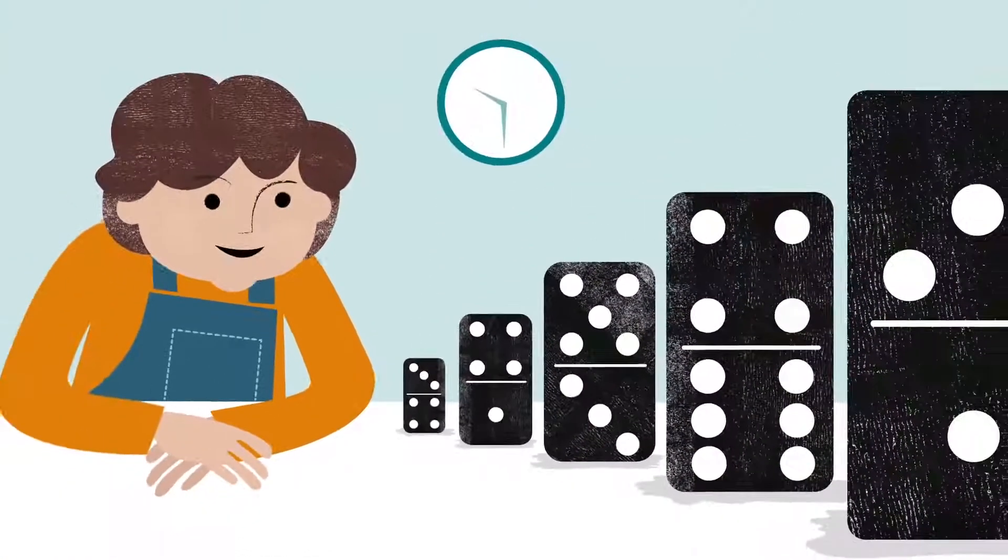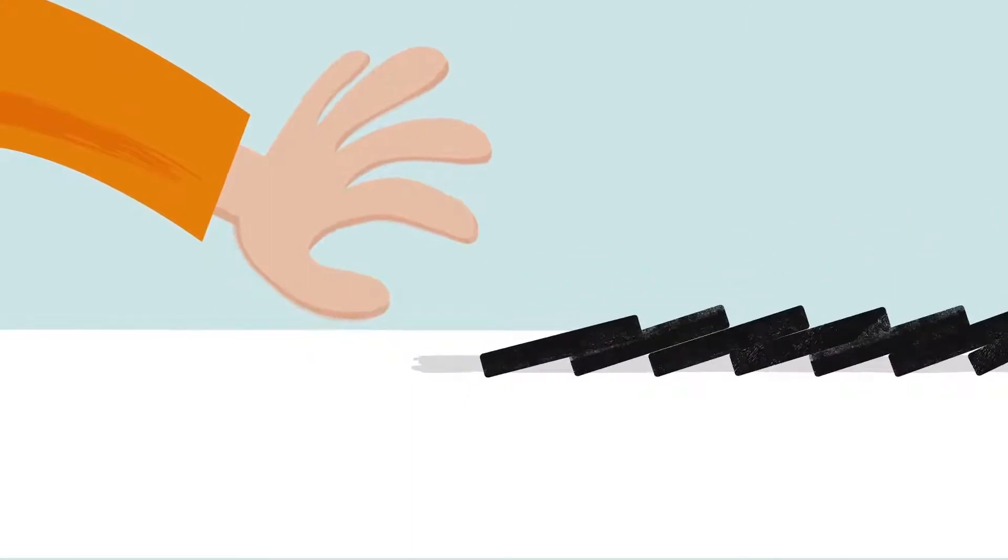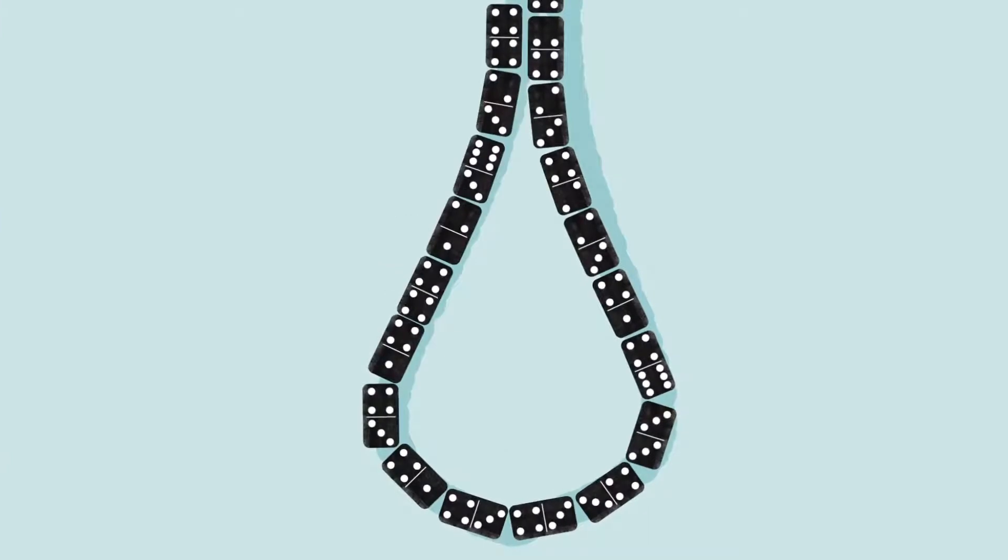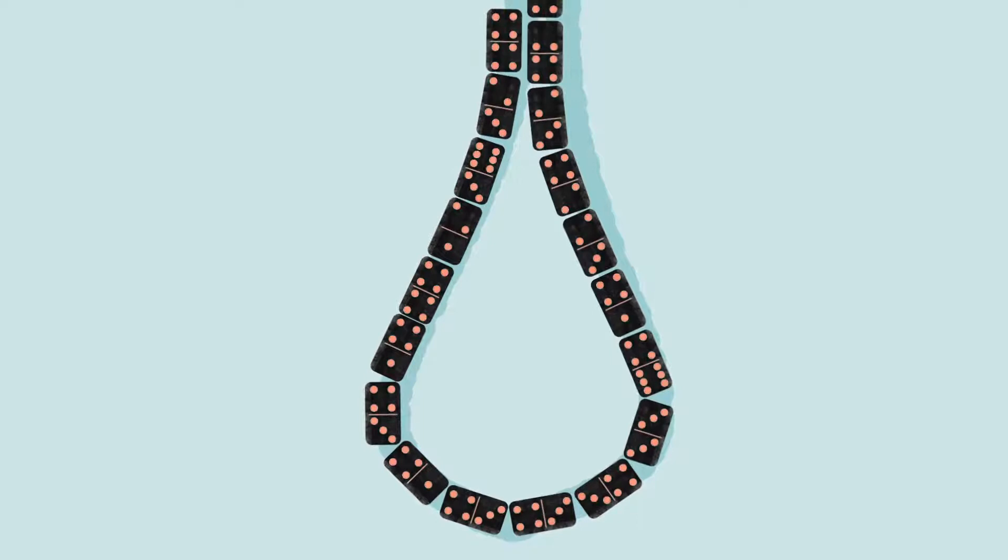When someone is injured and bleeds, their body triggers the activation of a series of clotting factors. These factors are activated in an orderly chain, just like a line of dominoes, to form a clot and stop the bleeding.